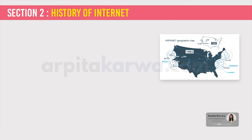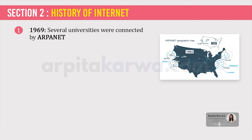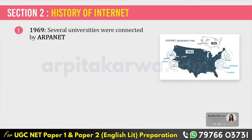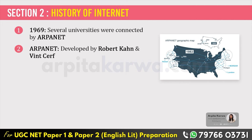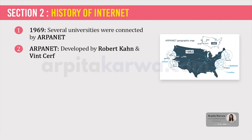The internet began in 1969 as a research project funded by the Department of Defense, with a goal of creating a means of communication besides telephone lines. The first network was called ARPANET, which stands for Advanced Research Project Agency Network. The focus was on communicating if part of the network was disabled. This early network was the precursor to the internet. In 1969, University of California at Los Angeles, University of Utah and some other universities were connected using ARPANET, developed by Robert Kahn and Vint Cerf.